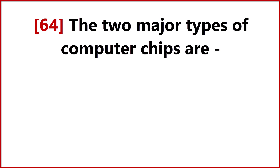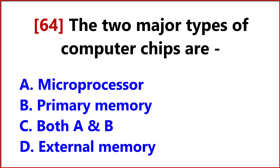The two major types of computer chips are? Answer Option C: Both A and B — microprocessor and primary memory.